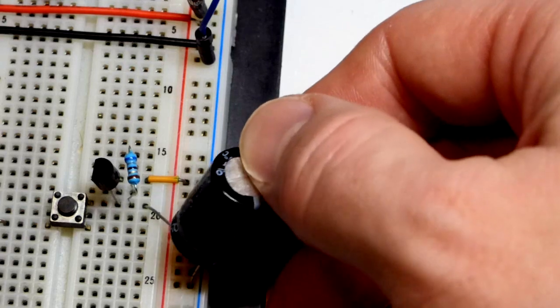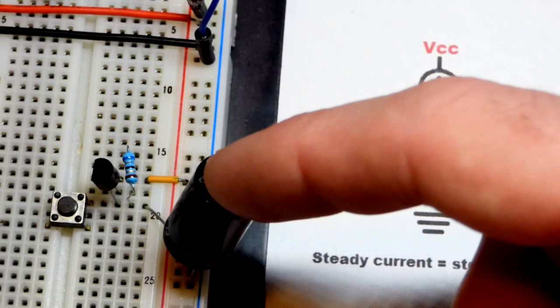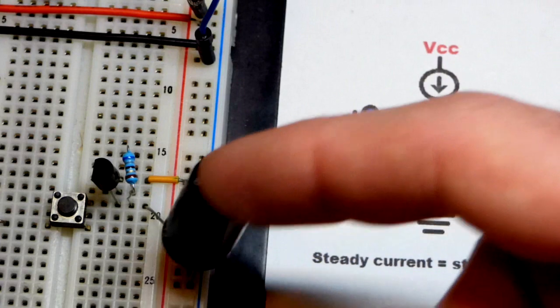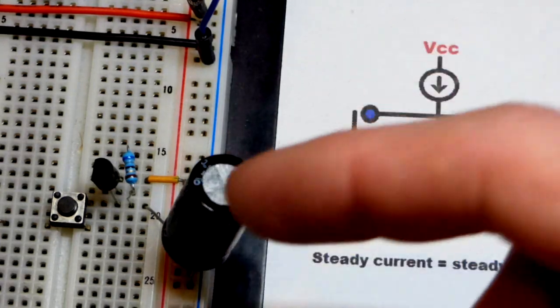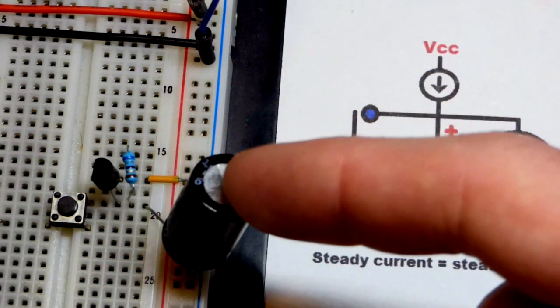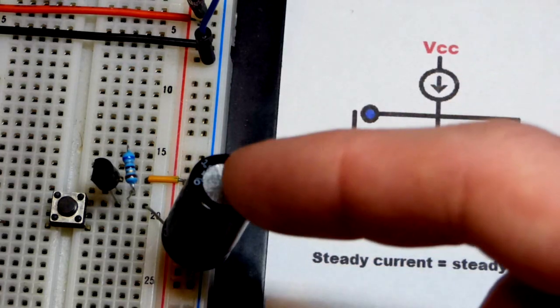So for each milliamp of current you give this, each second it will go up 1 volt. If we gave it 2 milliamps of current it would go up 2 volts every second.